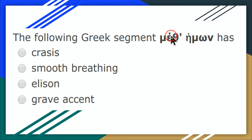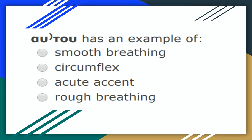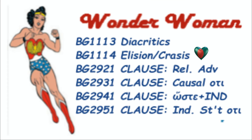So what do we have in this example sentence? We have an acute, we have an elision mark, and we have a rough breathing. Looking at 'outu' as an example — made larger — we have a smooth breathing because the vowel is going away. And 'kalos' — that's the circumflex.